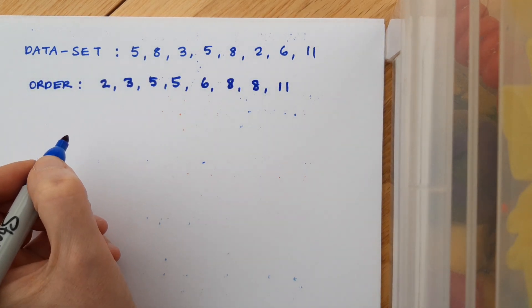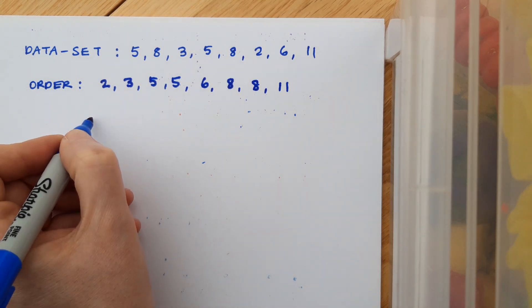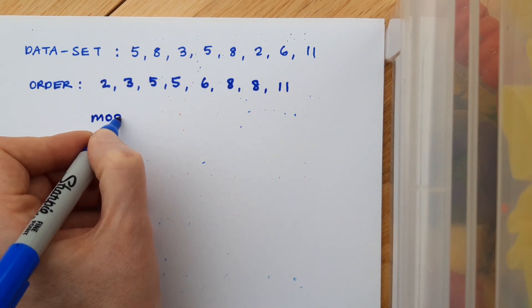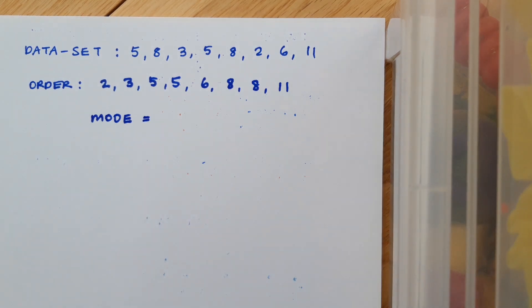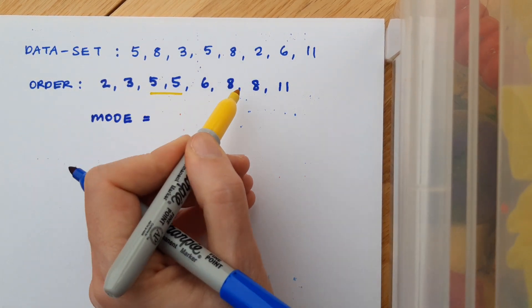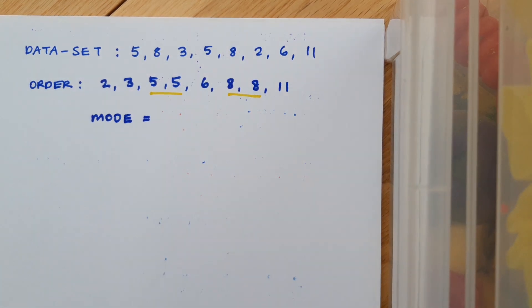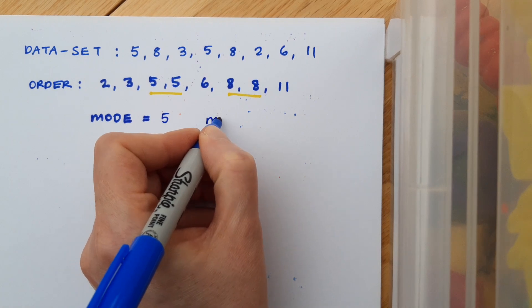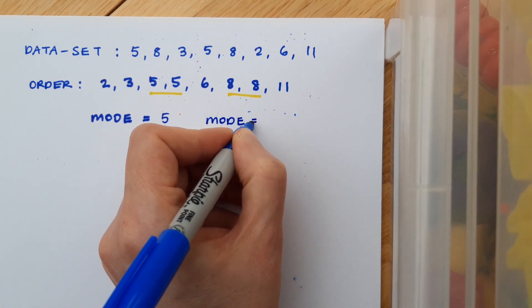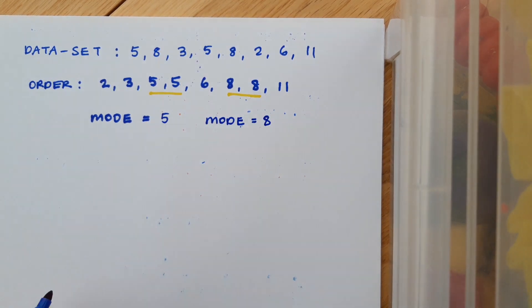And now I want to calculate the mode, the median and the mean. So the mode, first of all, is the most frequently occurring piece of data. Well, this time I actually have two of those. I've got five occurring twice and eight occurring twice. So my modes are five and eight. There are two of them.